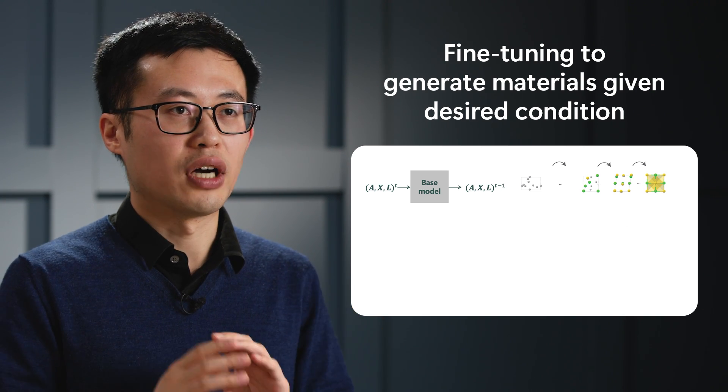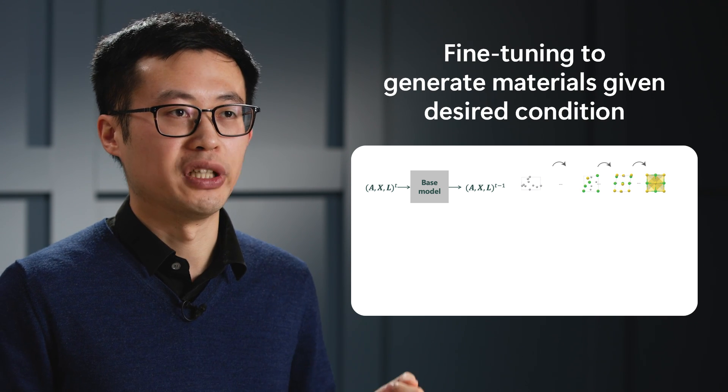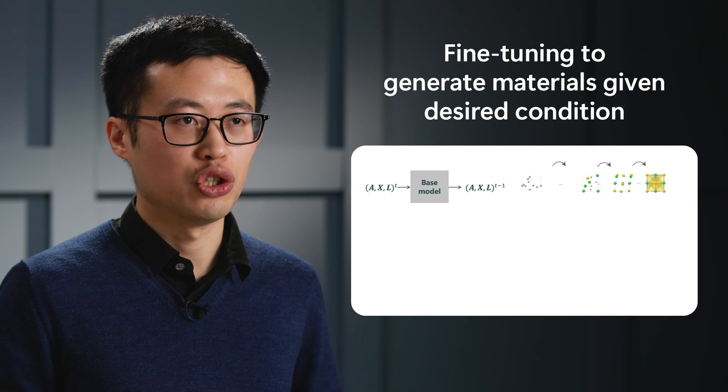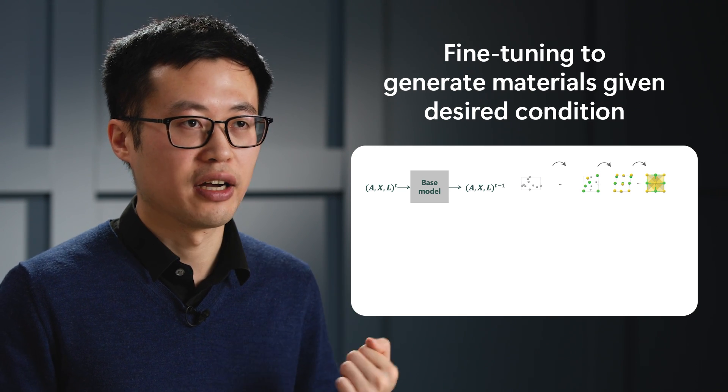Given this diffusion architecture, we train the base model of MetaGen using the structure of all known stable materials. Once trained, we can generate novel stable materials by sampling from the base model unconditionally.